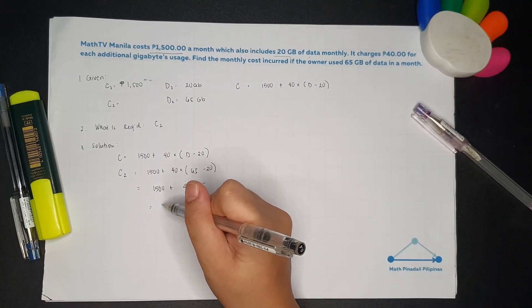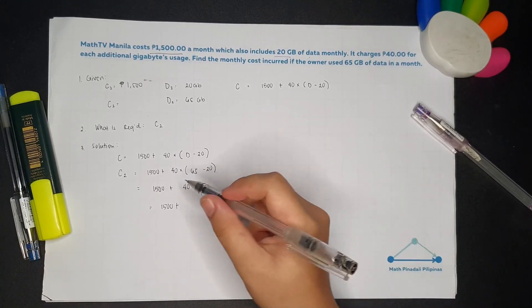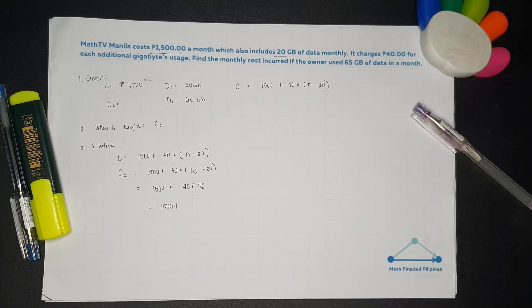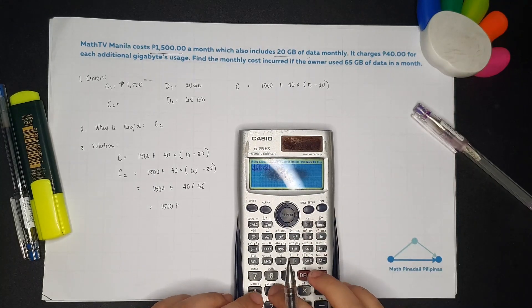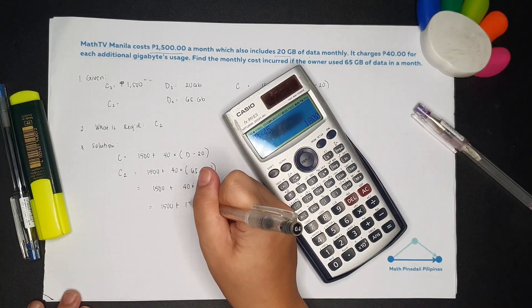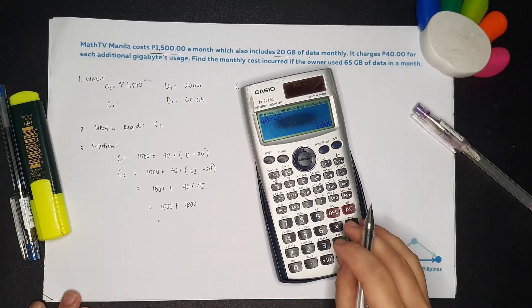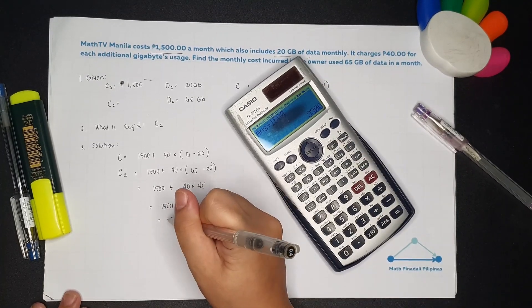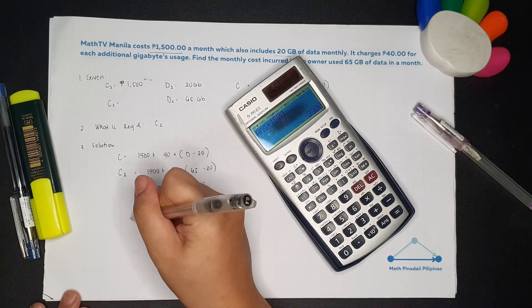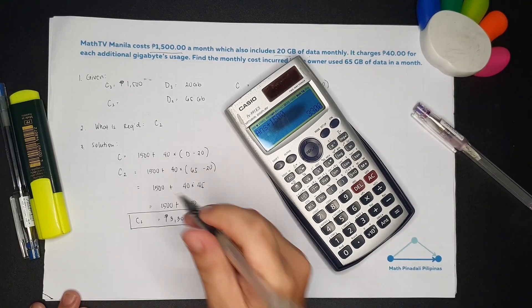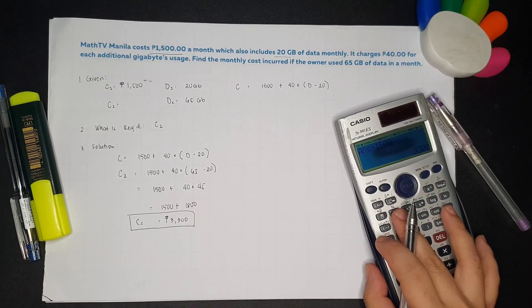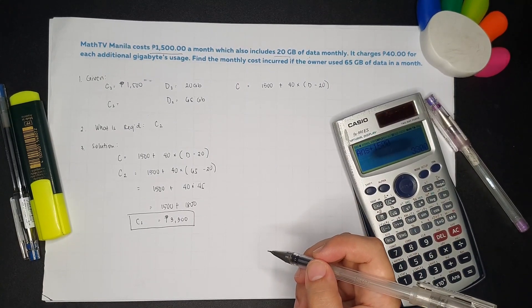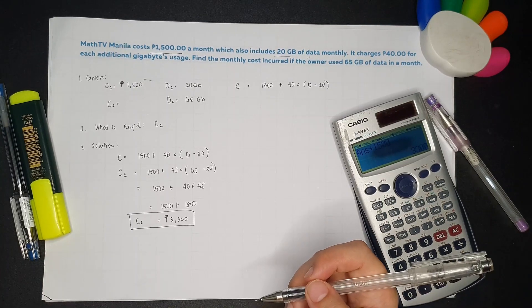And then, 1,500 plus - let's get a calculator to make it easier. 40 times 45, that's 1,800. So, 1,800 plus 1,500 equals 3,300. So the final answer is 3,300 pesos. If you consume 65 GB of data monthly, you're going to pay 3,300 pesos.